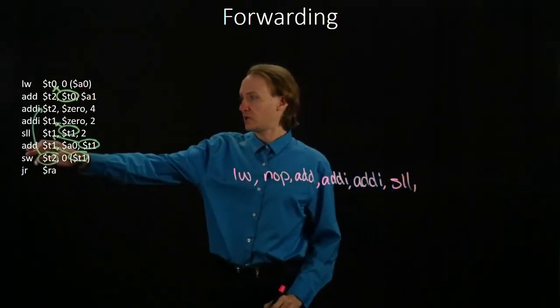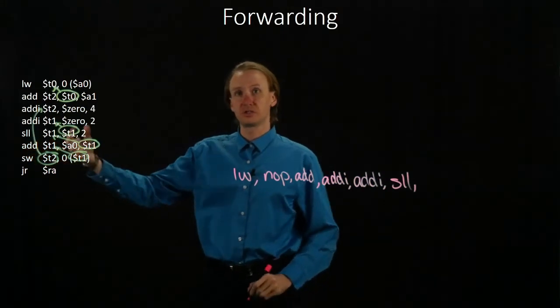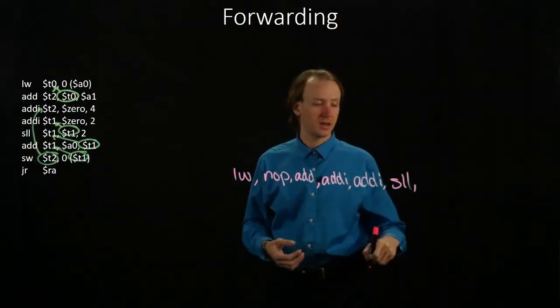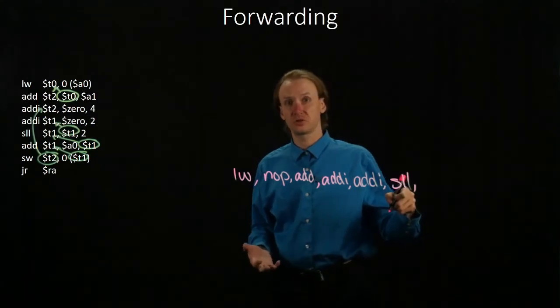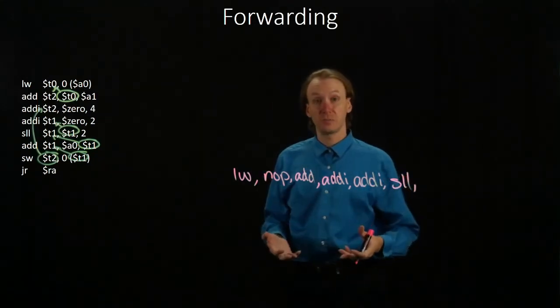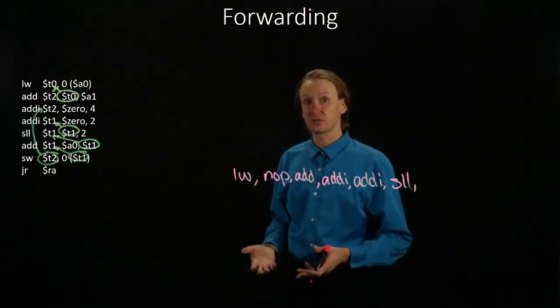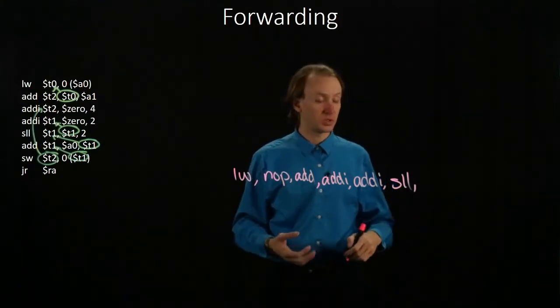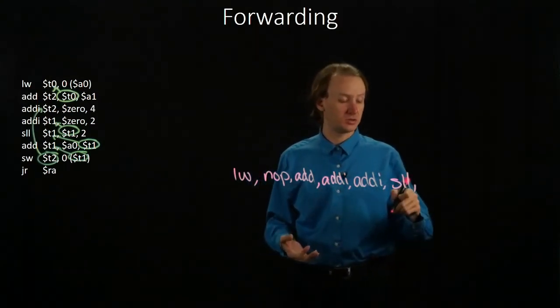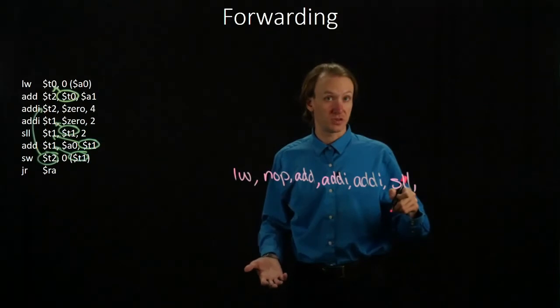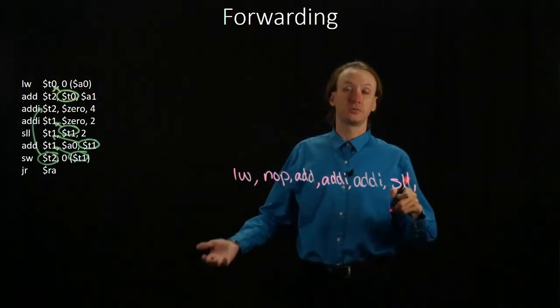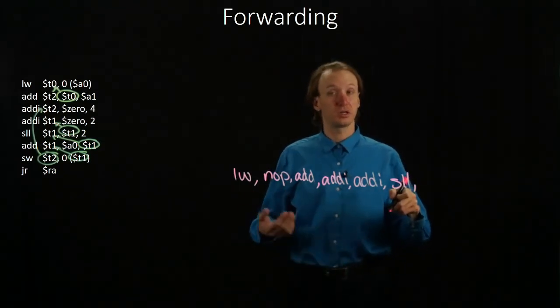Now I've got an add instruction, which is dependent on the results of the shift-left logical, and again, this is going to compute its results in its third stage, so they'll be available to the add instruction in its third stage without any waiting. We can just forward those from the end of the ALU stage, from the shift-left logical instruction to the beginning of the ALU stage in the add instruction.